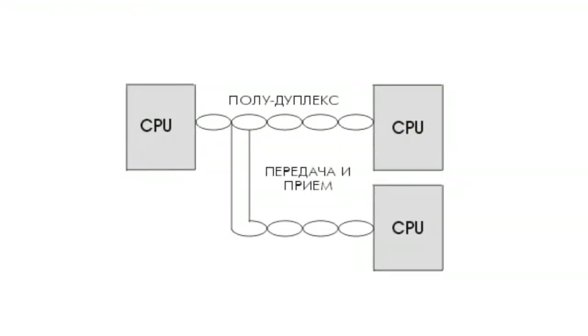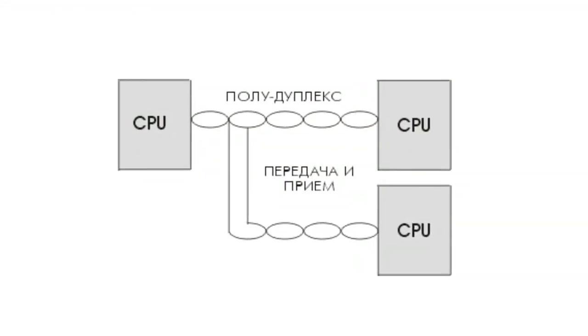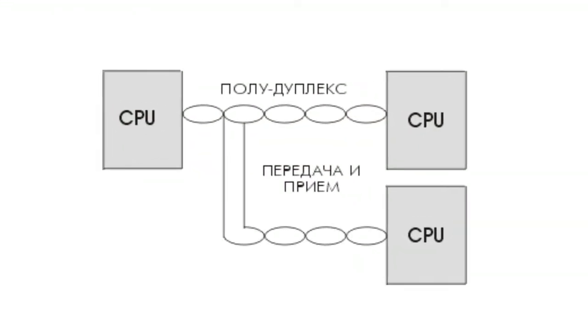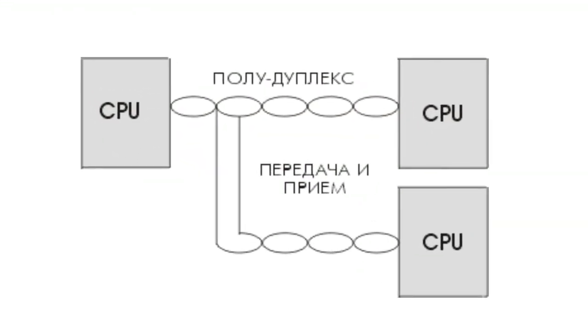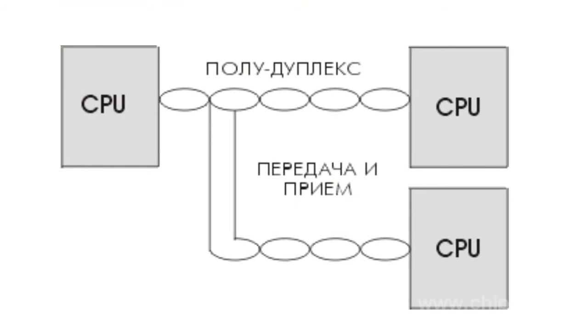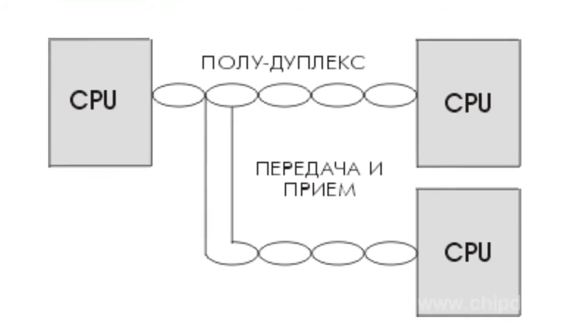RS-485 is one of the most popular standards for the physical communication level. The physical level is a communication channel and signal transmission, and it represents the first level of the OSI open systems interconnection model.